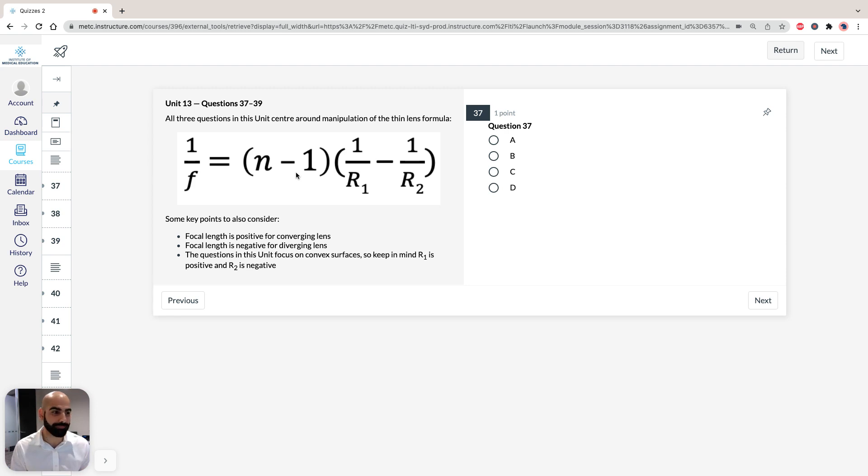Nonetheless, for this unit, we just have to worry about manipulating this equation. So it's also important to note some key points here that we're told in the stimulus. So the focal length has to be positive for a converging lens, and the focal length has to be negative for a diverging lens. And lucky us, we're not going to be working with concave surfaces. So we're going to be focusing on convex for the next three questions, which means it's going to be a positive focal point. And that means we have to keep in mind as well that R1 is going to be positive, and R2 is going to be negative.